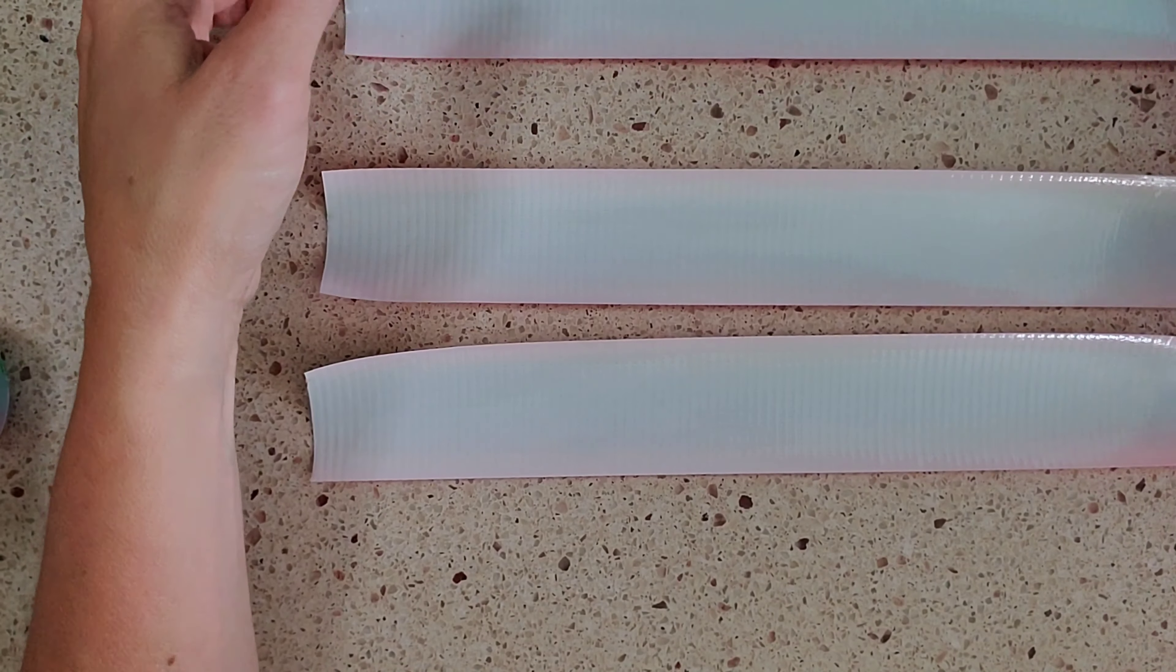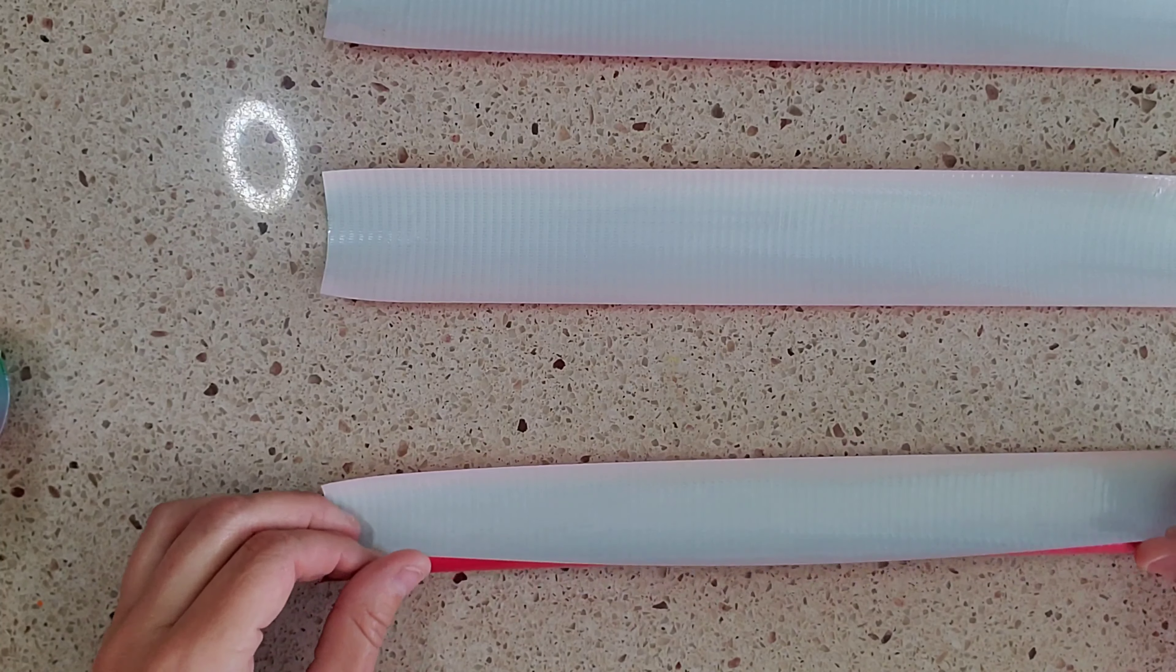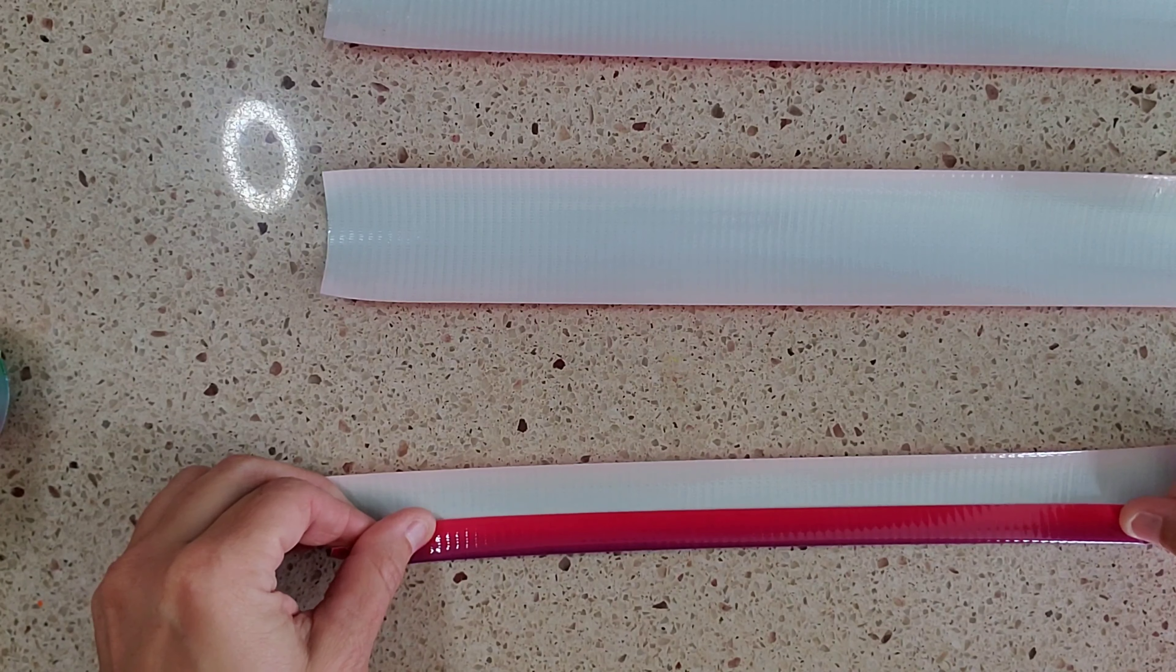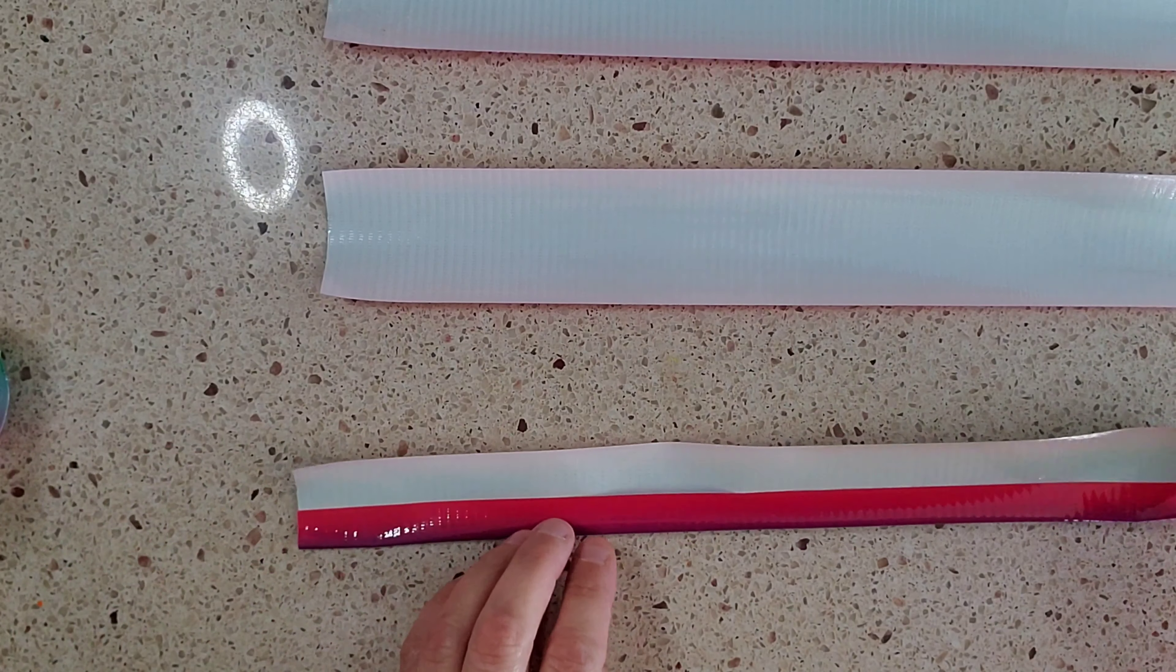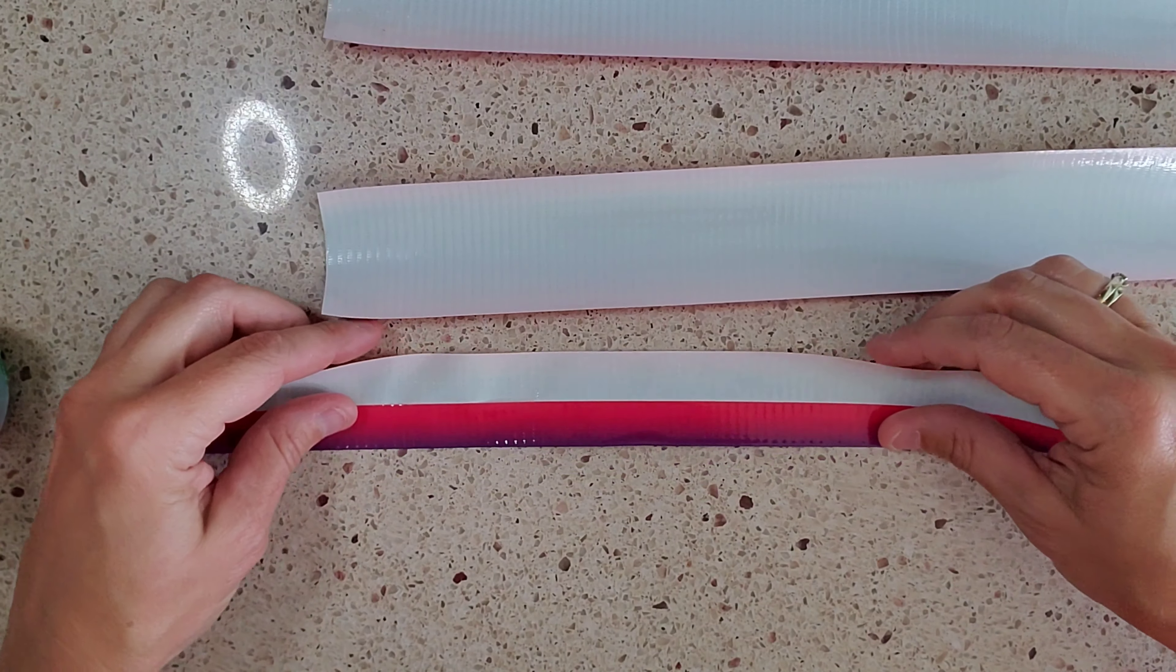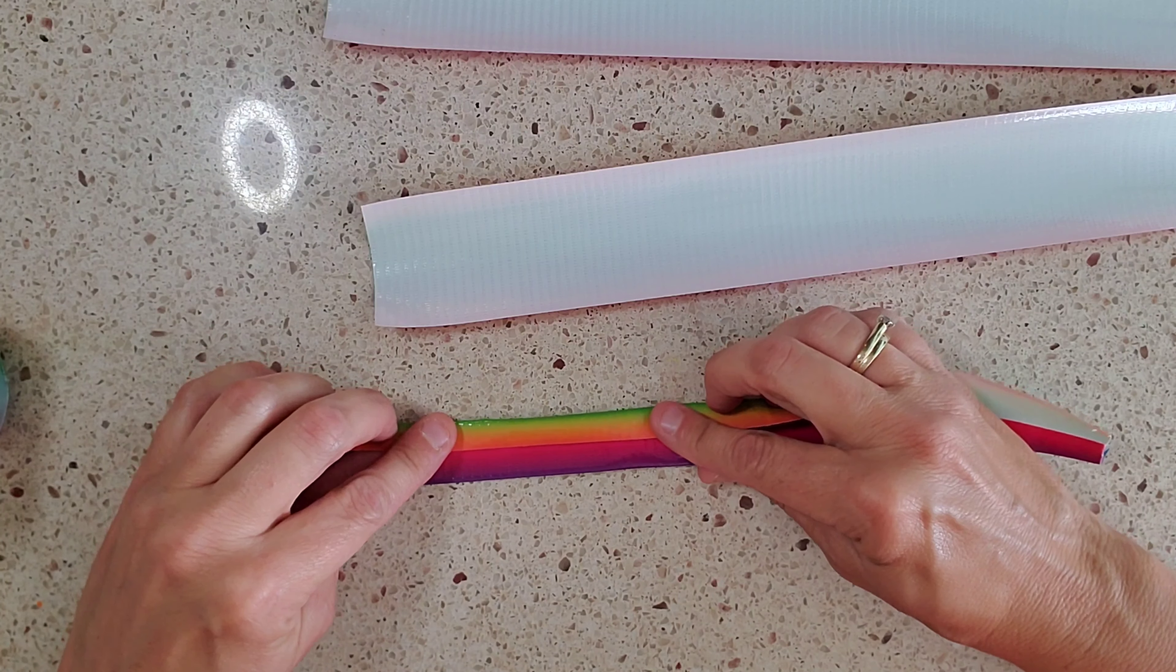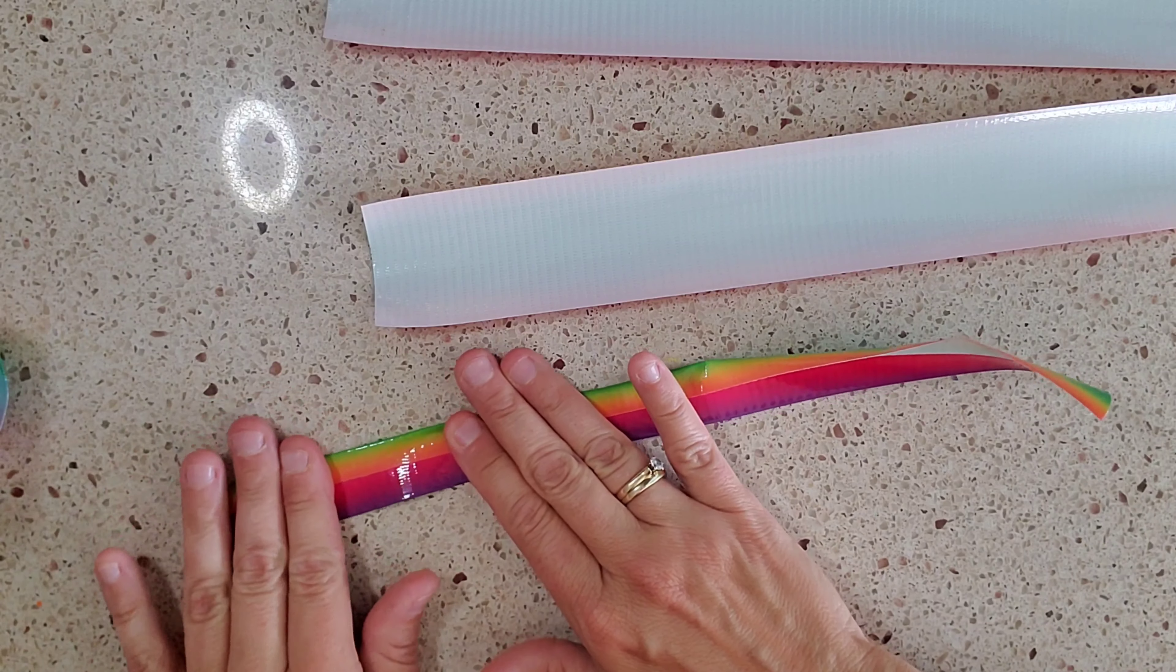So you have your three duct tape pieces. What you need to do here is fold this kind of to the center like I showed you here. Then you'll fold the other piece right to the edge of where you did the other one. Maybe overlapping just a tad.